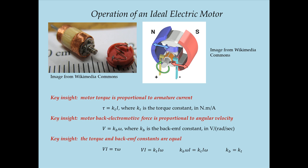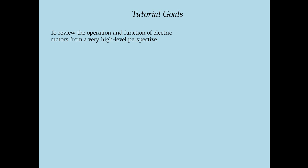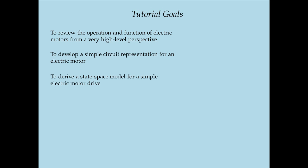So we now have two relationships — torque equals torque constant times current, and voltage equals back EMF constant times angular velocity — where the torque constant and back EMF constant are equal, describing the behavior of an ideal motor. However, I have never seen an ideal electric motor in real life. The ideal motor has certain properties you cannot truly realize in real life. So the next goal is to develop a simple circuit representation of a real electric motor in order to derive state-space models of electric motor drives.